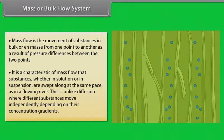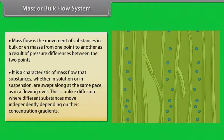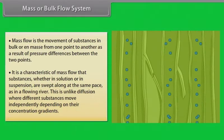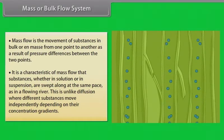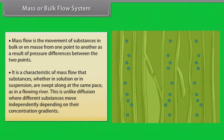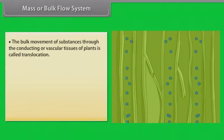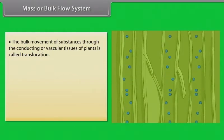This is unlike diffusion, where different substances move independently depending on their concentration gradients. Bulk flow can be achieved either through a positive hydrostatic pressure gradient, e.g. a garden hose, or a negative hydrostatic pressure gradient, e.g. suction through a straw. The bulk movement of substances through the conducting or vascular tissues of plants is called translocation.